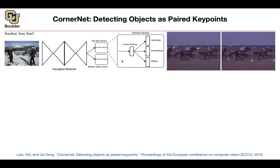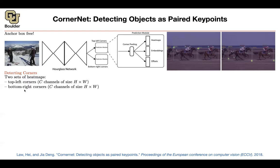The task is detecting corners the same way you detect keypoints. You output two sets of heat maps — these are per-pixel predictions, each with C channels corresponding to the number of categories. For Pascal VOC that's 20, and for Microsoft COCO that's 80.